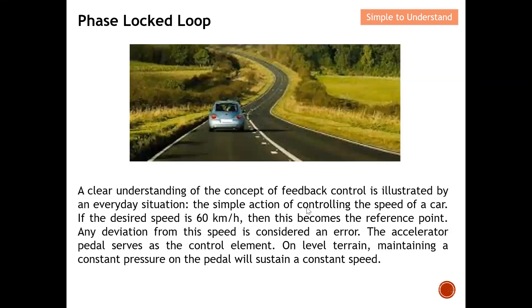Let me explain the Phase-Locked Loop using a daily example so you have a better understanding. A clear illustration of feedback control is shown by an everyday situation: controlling the speed of a car. Let's say the desired speed is 60 kilometers per hour — this becomes the reference point. This is similar to the reference in the phase detector, which is typically a stable signal.